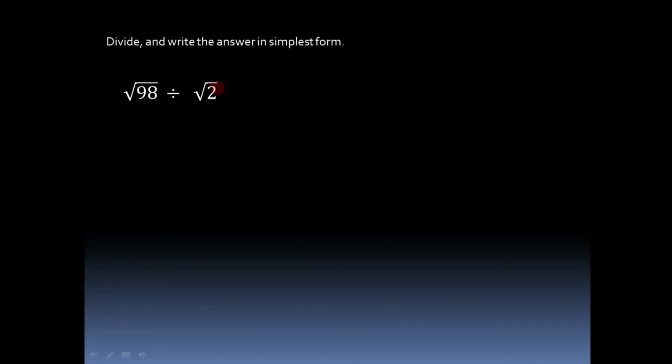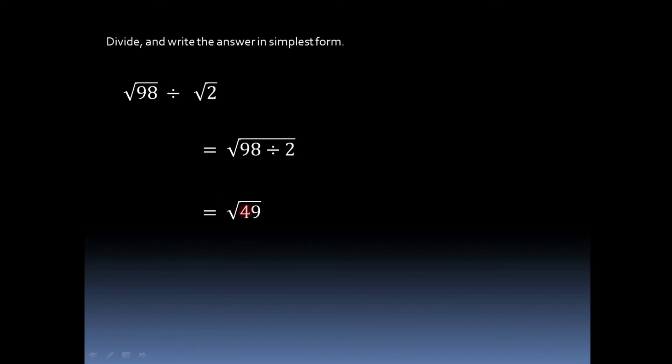Now let us understand the division of two surds. The question is: divide and write the answer in the simplest form. The first problem is root 98 divided by root 2. The same rule applies for division: the two surds must have equal orders. Root 98 and root 2 have equal orders, that is 2. So we only divide the radicands: root 98 divided by 2. Dividing 98 by 2 we get root 49, and the square root of 49 is 7.